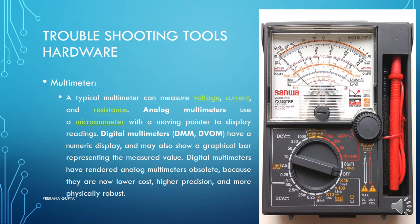Troubleshooting tools. The first is the multimeter. A typical multimeter can measure voltage, current, and resistance. There are two types of multimeters: analog and digital.